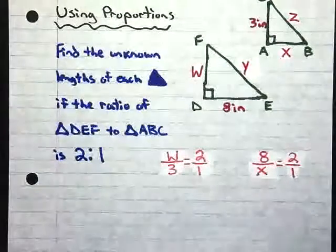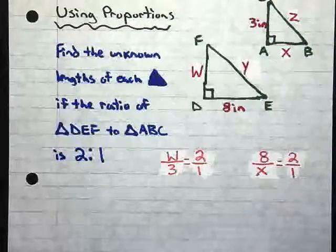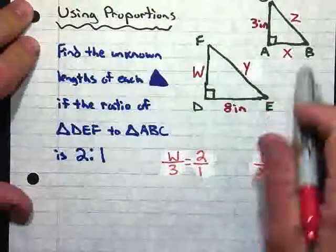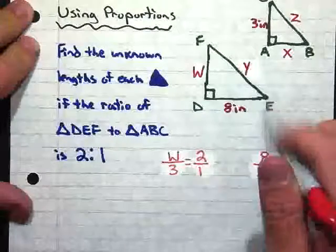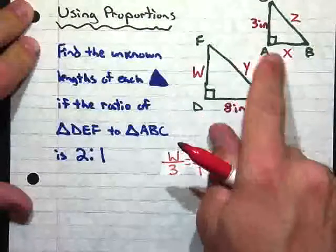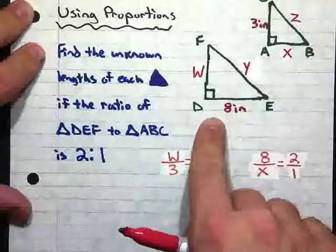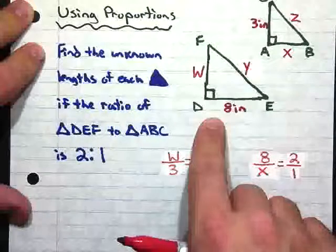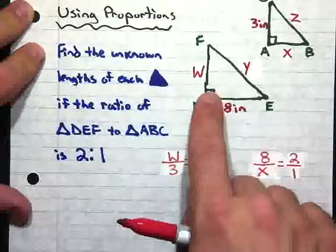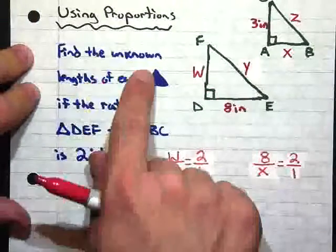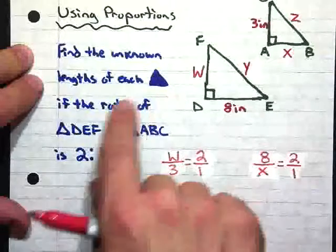So let's go ahead and take a look at how we can actually use proportions to solve for problems. So here, we're given two triangles, triangle ABC, and one of those lengths is 3 inches. The other one, we're given X and Z. And in our second triangle, triangle DEF, we're given an 8-inch length, a side that's W, and a side that's Y.